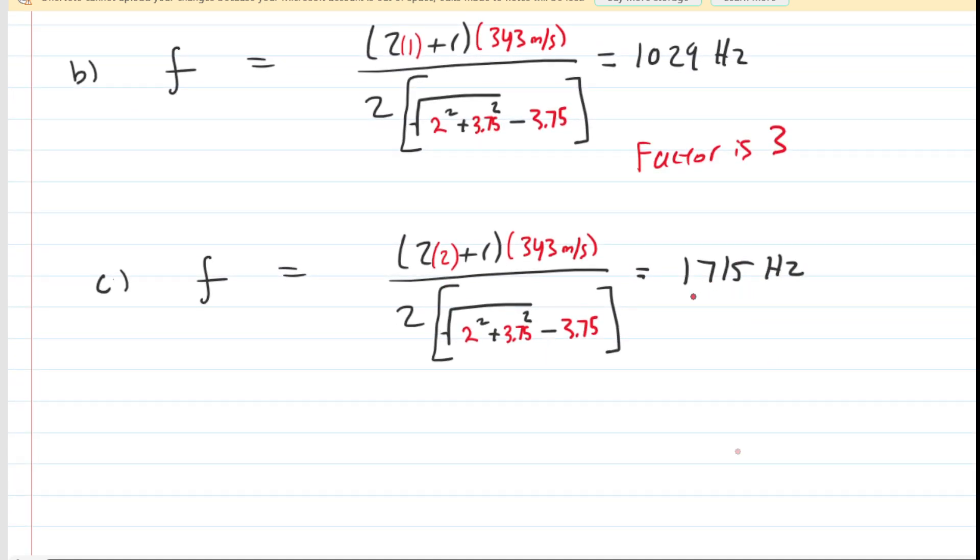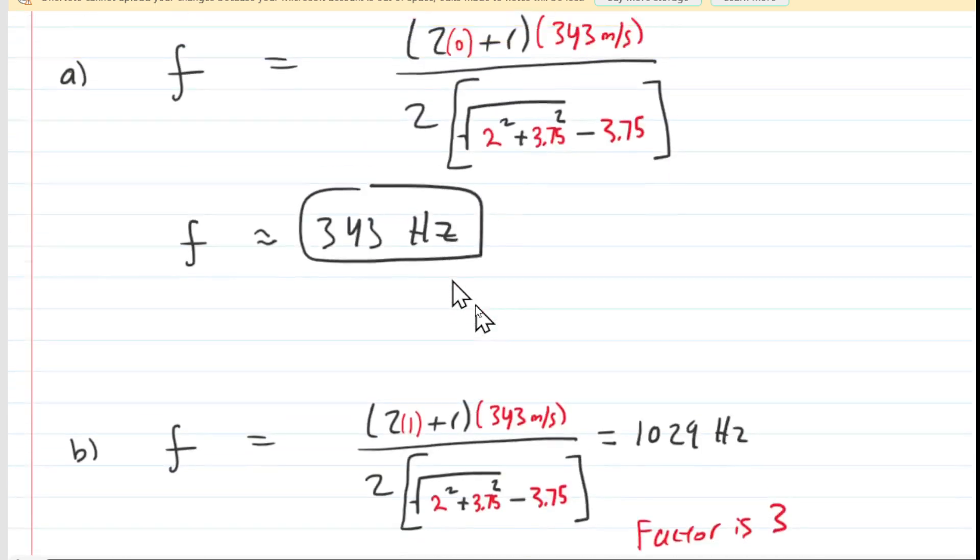On the other hand, for part c, 1715 hertz, if you divide that by 343 hertz, you get 5. So for part c, the factor is 5. So that takes care of the answers for a, b, and c.